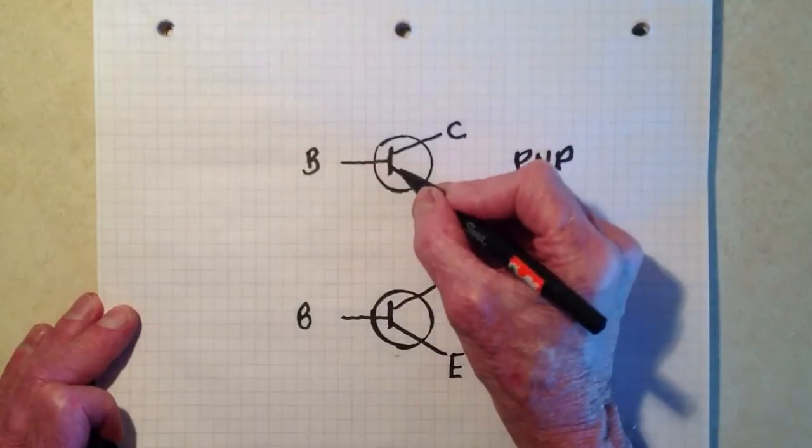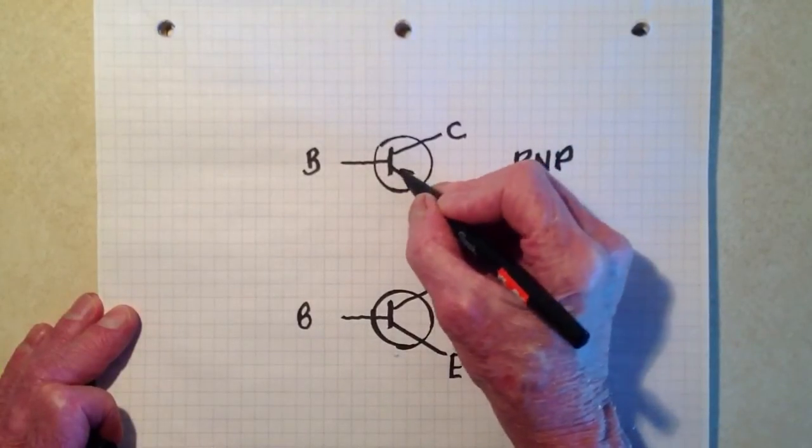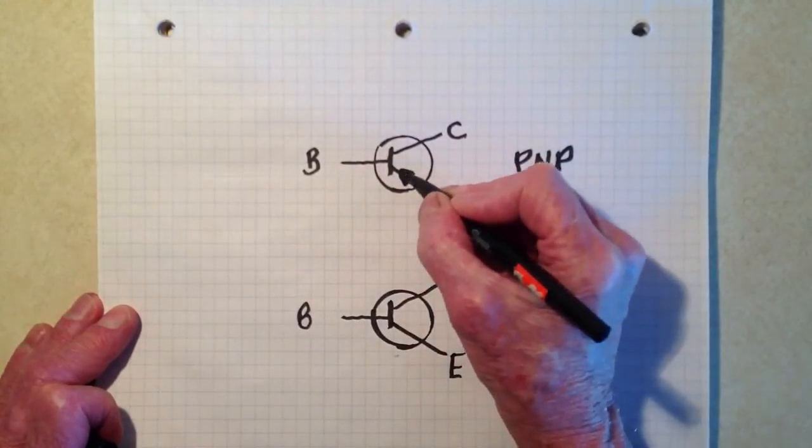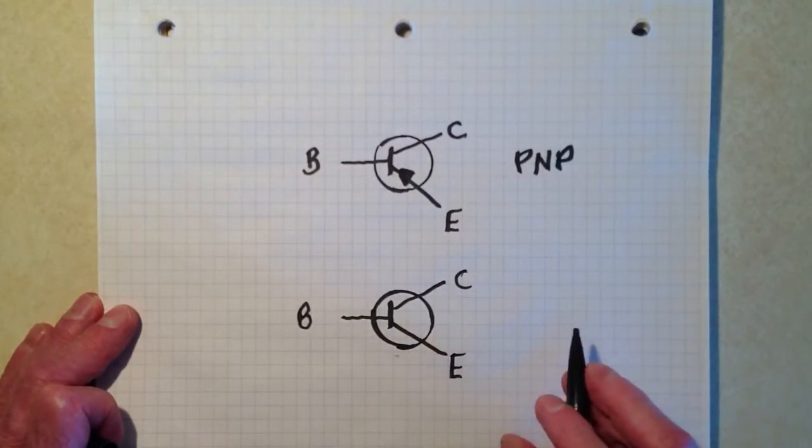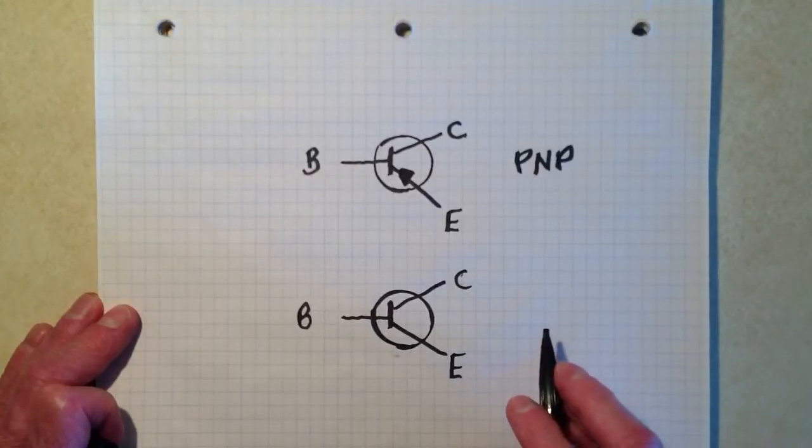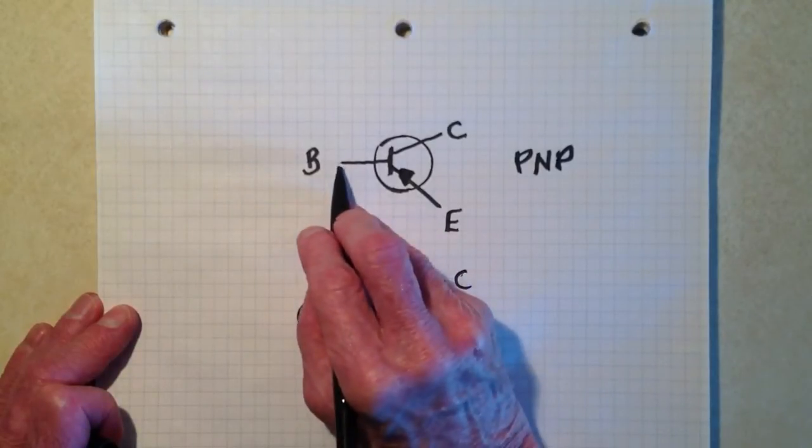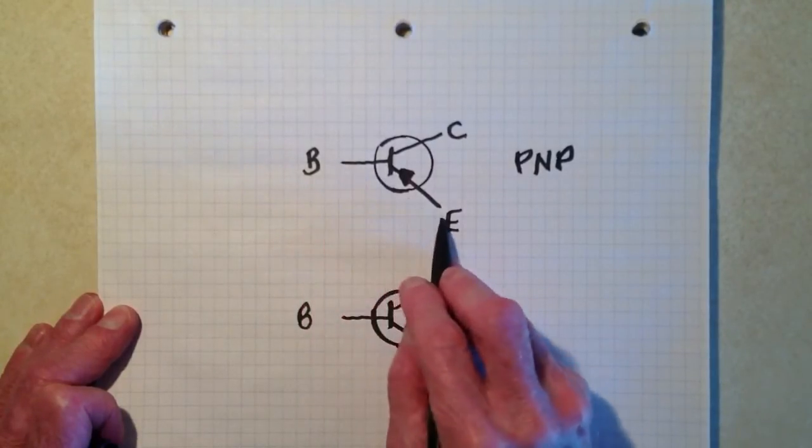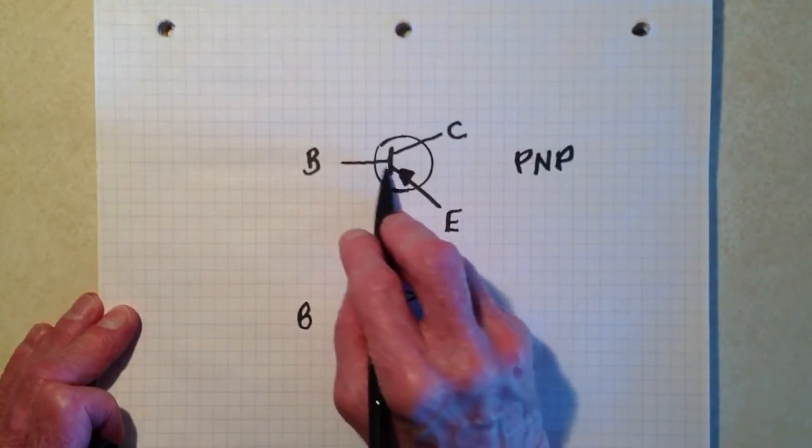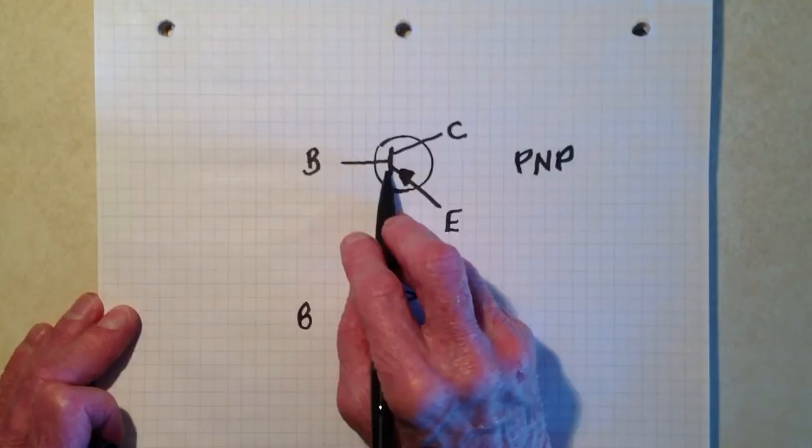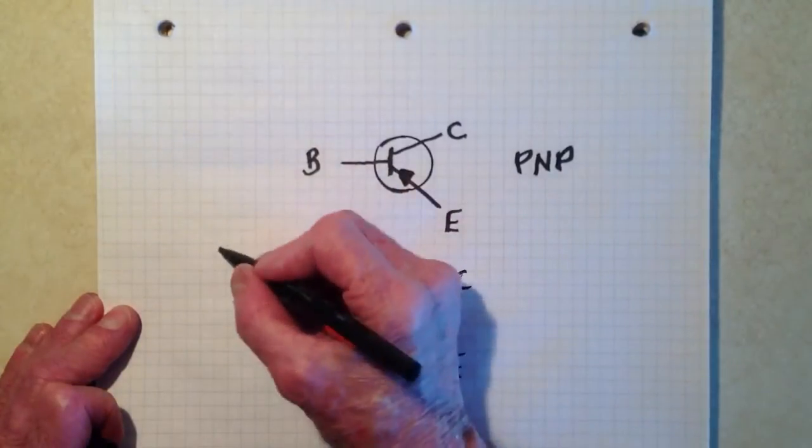Remember, electrons can always flow easily from an N-type semiconductor material to a P-type when there is a junction there, and there is. There are two junctions in a bipolar transistor.